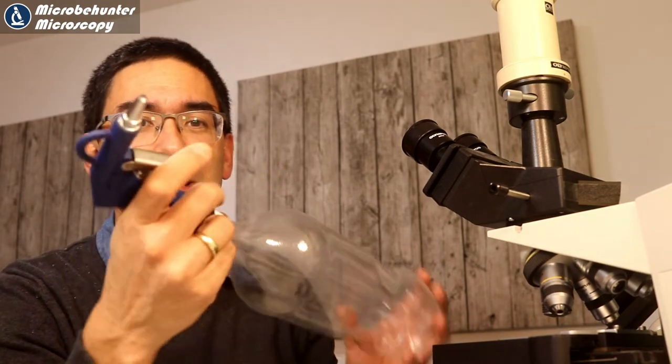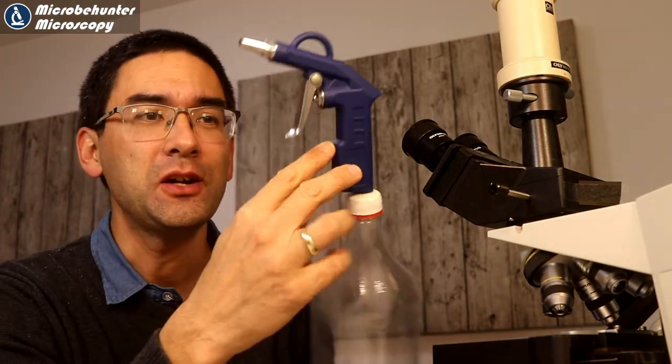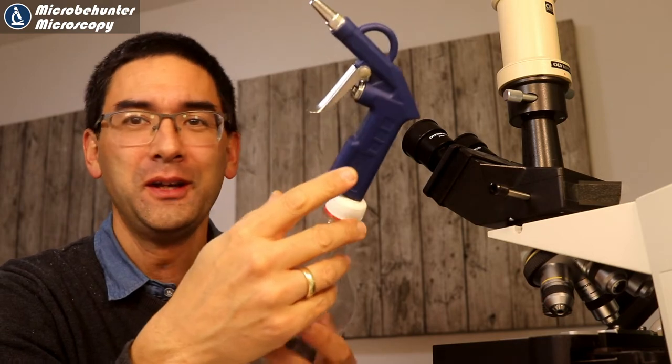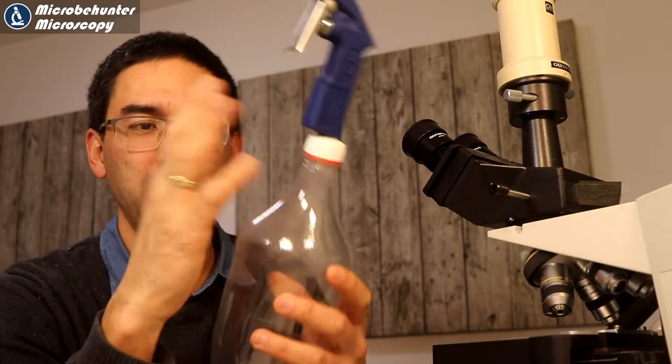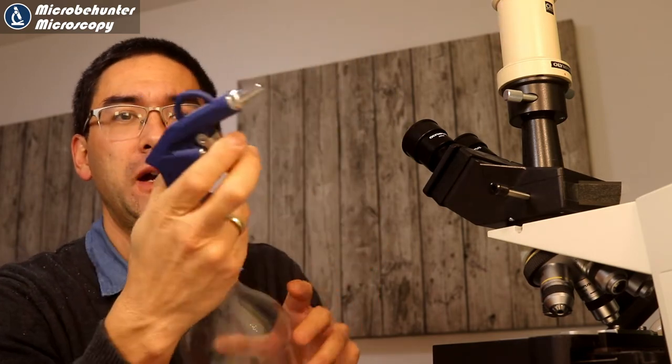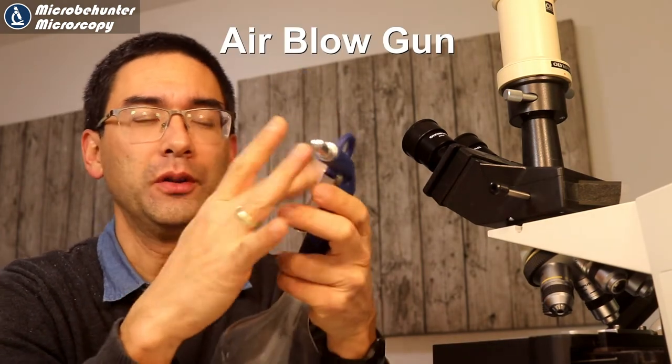Hi, Microbe Hunter here. This here is a compressed air dust remover that I made some time ago. You see there's a Coke bottle here and there is an air gun, I think you call this.